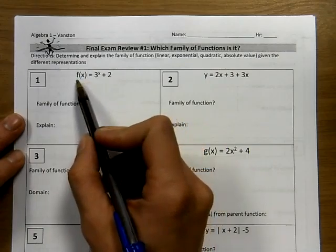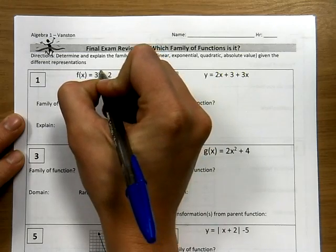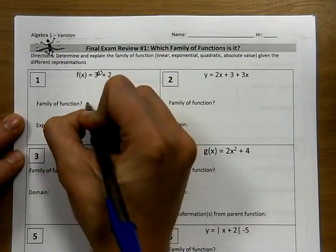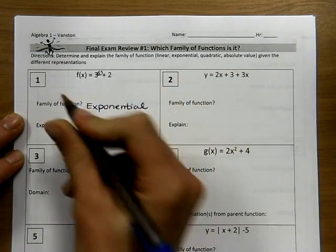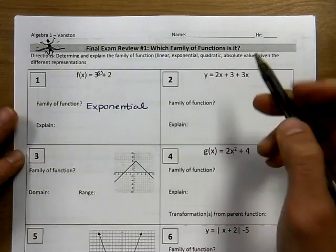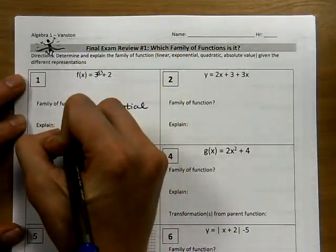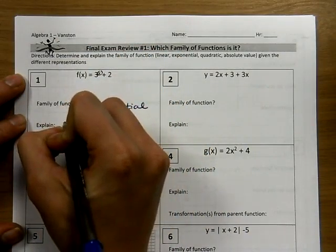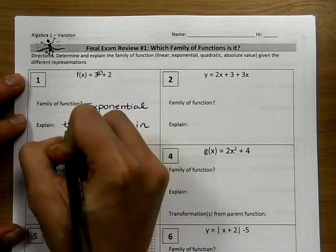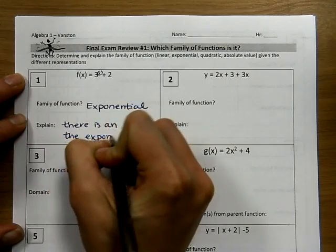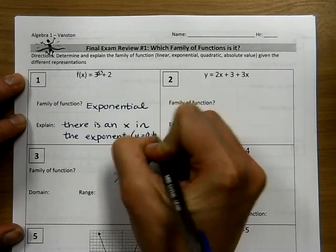For problem 1, we're given an equation. Because I see an x in the exponent, I note that this is an exponential function. There is an x in the exponent — in other words, it's in the form y equals a times b to the x.